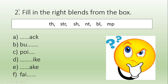Listen to the words: A is supposed to be 'black'. B is 'bump'. C is 'point'. D is 'strike'. E is 'shake'. F is 'faith'. Now choose the blends from the box and put them in the right places.